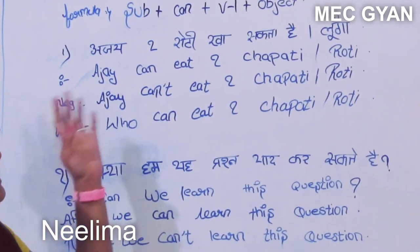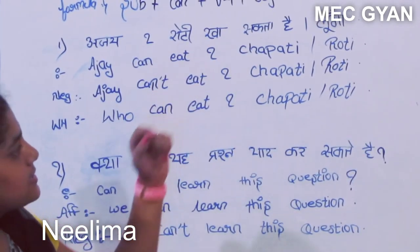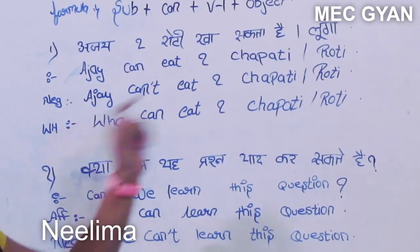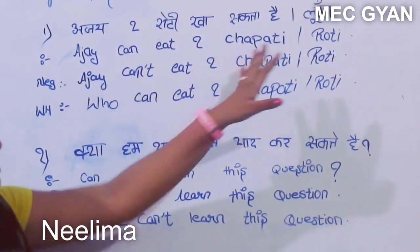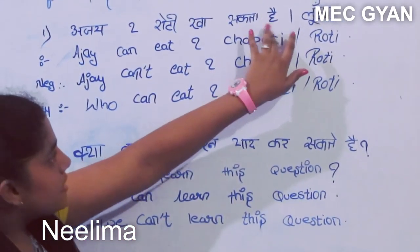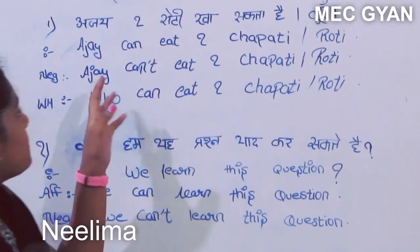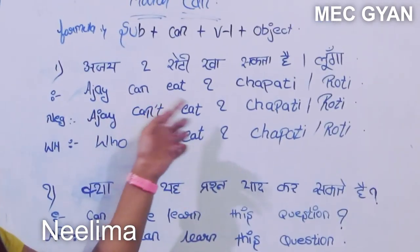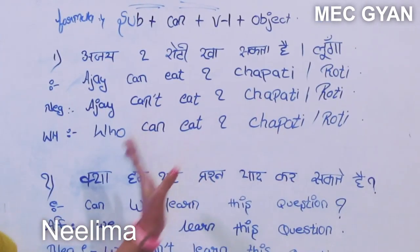This example is: 'Ajay do roti kha sakta hai.' You can write 'oblique' also. The English translation is: Ajay can eat two chapatti, or oblique roti.